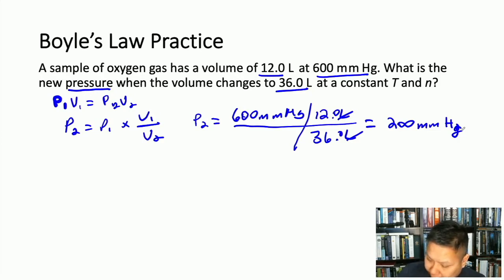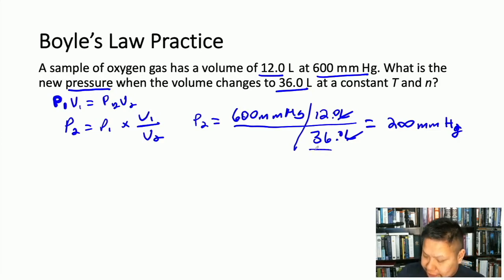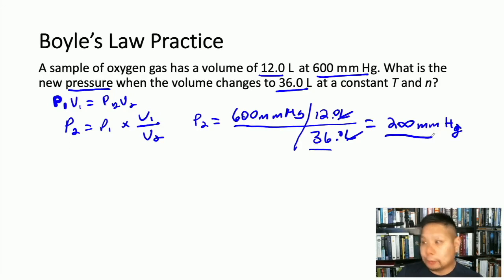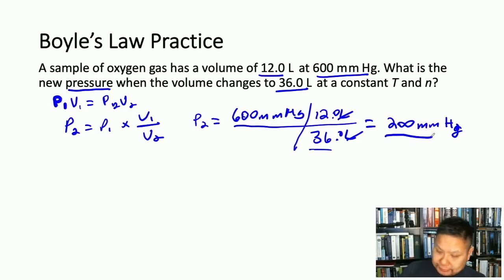As the volume increased from 12 to 36 liters, the pressure decreased from 600 to 200 mmHg. This makes sense because with more space, the gas has more room to collide with things, reducing the pressure.